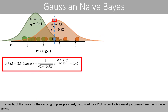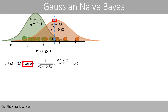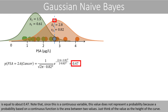The height of the curve for the cancer group previously calculated for a PSA value of 2.6 is usually expressed like this in Naive Bayes, where the probability density of a PSA level of 2.6, given that the class is cancer, is equal to about 0.47. Note that since this is a continuous variable, this value does not represent a probability, because a probability based on a continuous function is the area between two values. Just think of this value as the height of the curve.